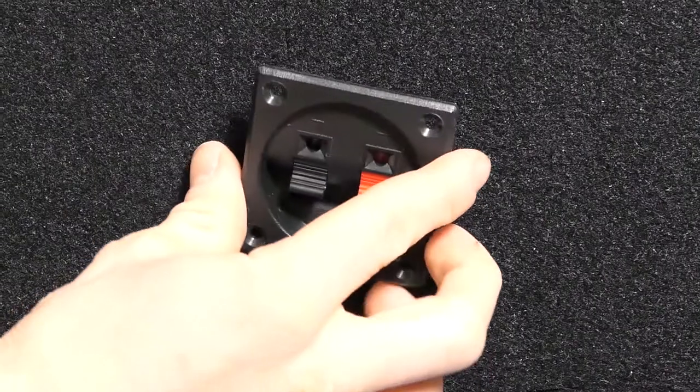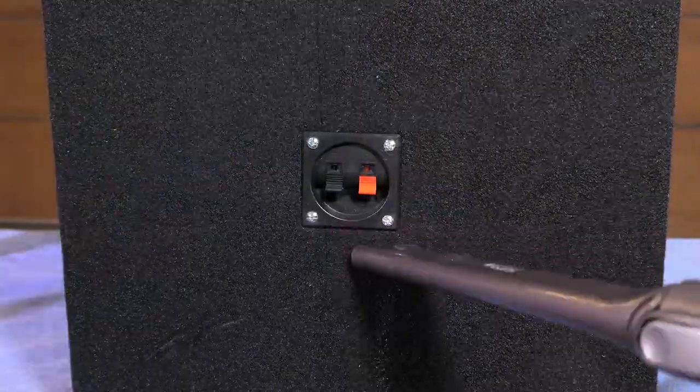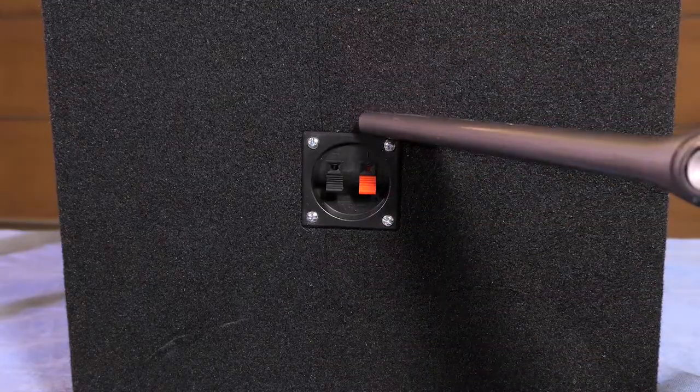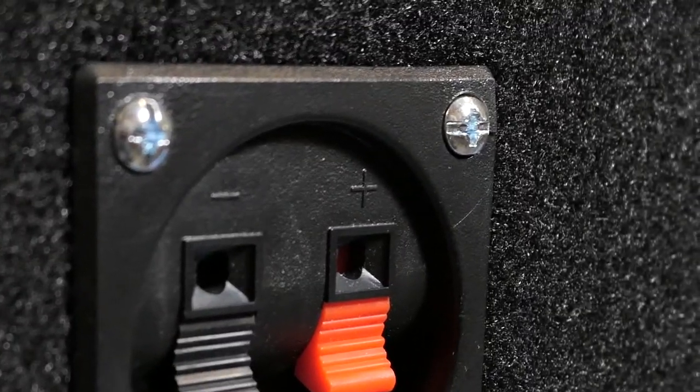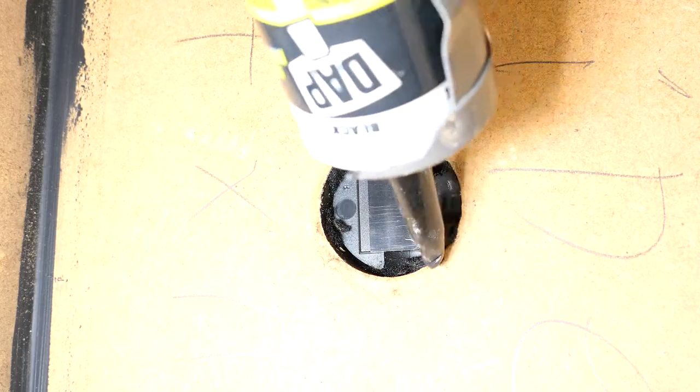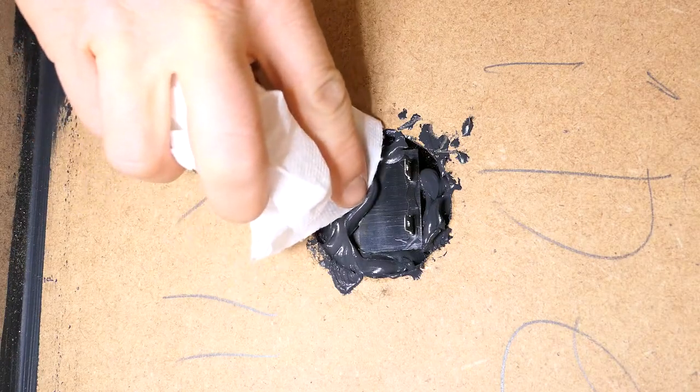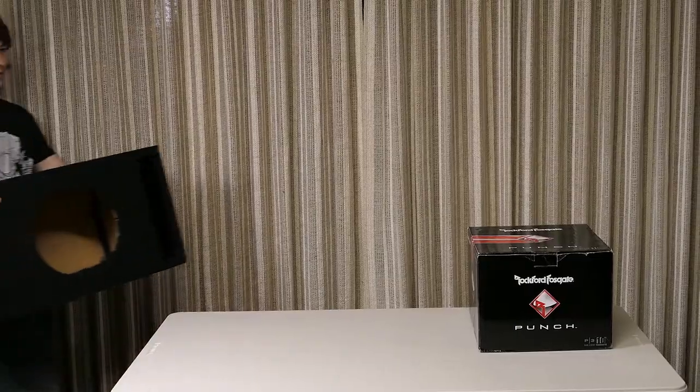Next I'll install the terminal cup using a drill and appropriate sized wood screws. Then I'll just vacuum off the sawdust. I did accidentally crack a corner with a screw but it won't affect anything. Lastly I'll cover the inside of the terminal cup with sealant to prevent any air leaks. And we're all done.